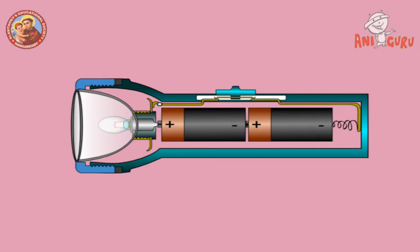When the switch is on, the circuit is completed and current flows in the circuit which makes the bulb glow.